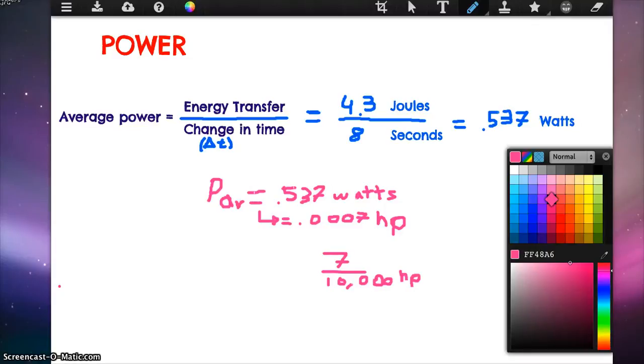We have to find out what the average power in our mousetrap car is, and our average power is equal to our energy transferred over the change in time, and that's all equal to 4.3 joules, which is the energy transferred, divided by the 8 seconds, and the 8 seconds is the change in time in my video, and that is equal to 0.537 watts.